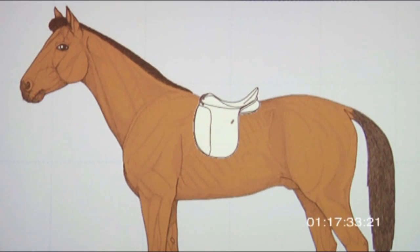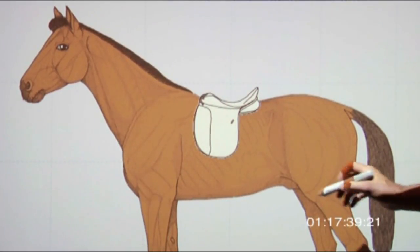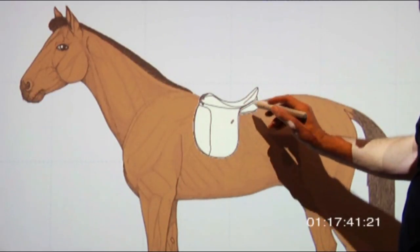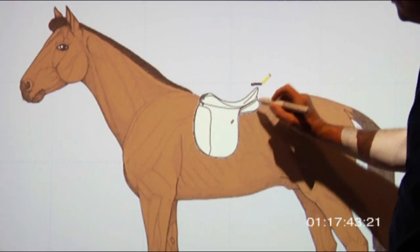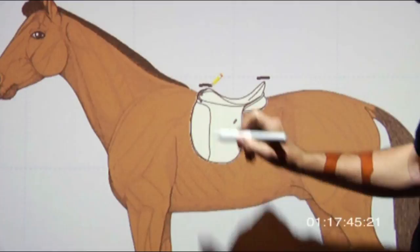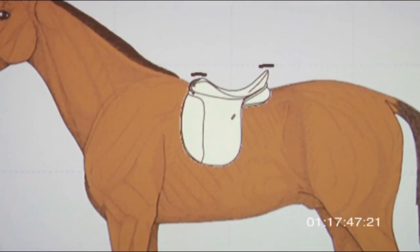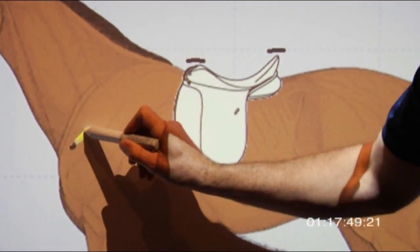This slide is to show how to evaluate saddle fit. First look, this is a dressage saddle. The cantle should always be slightly higher than the pommel. You want to see if the saddle